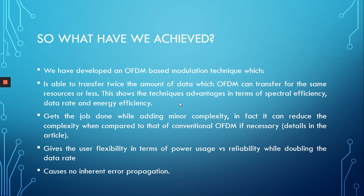As we showed, half the power can be saved or reallocated. Furthermore, OFDM-SPM is twice as spectrally efficient as conventional OFDM and gets the job done while adding minor complexity — of utmost importance for applications such as IoT. It can also reduce complexity compared to conventional OFDM if necessary. OFDM-SPM further gives the user flexibility in terms of power usage versus reliability, while the data rate remains doubled.